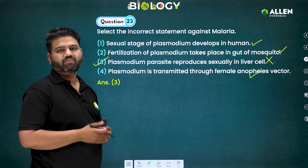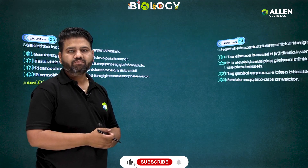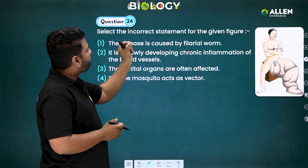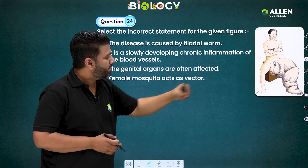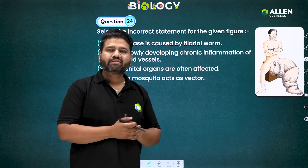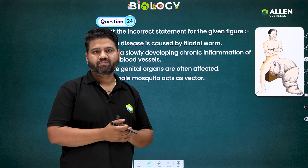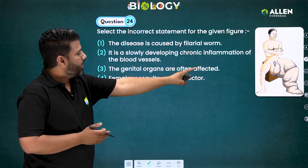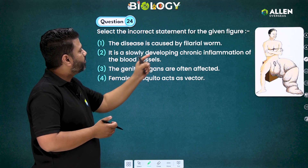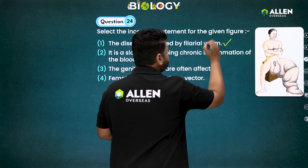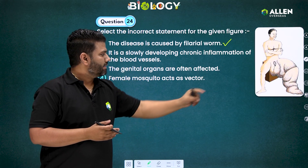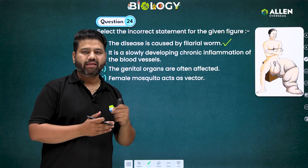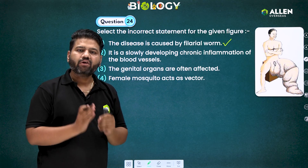Question number 24: select the incorrect statement for the given figure. This figure from NCERT shows the disease elephantiasis. The first statement says the disease is caused by a filarial worm — absolutely correct, because elephantiasis is caused by Wuchereria bancrofti or Wuchereria malayi, which are filarial worms. So the first statement is correct.